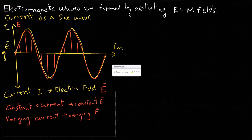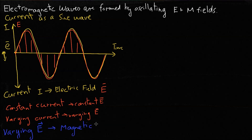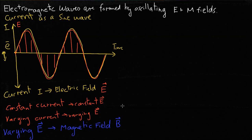One thing we may not know yet is that a varying electric field generates a magnetic field at right angles to it — this is something that we can test experimentally. We call our magnetic field B, and that's also a vector field, so we put little arrows over them to symbolise vectors. As we said, the magnetic field is at right angles to the electric field, so let's draw that on our graph as well.